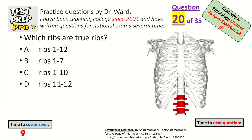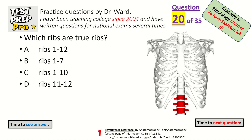Which ribs are true ribs? Ribs one through seven. You're doing amazing, keep it up.